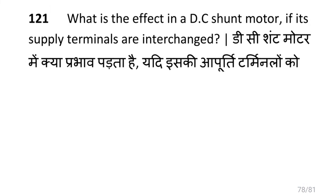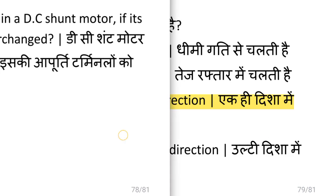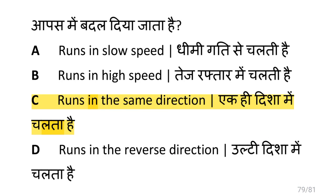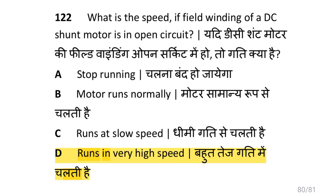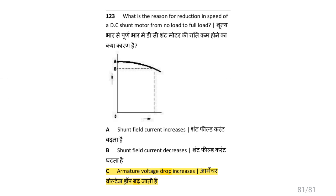What is the effect in a DC shunt motor if its supply terminals are interchanged? That is it runs in the same direction. What is the speed if the field winding of a DC shunt motor is in open circuit? Then it runs at very high speed. What is the reason for reduction in speed of DC shunt motor from no load to full load? That is armature voltage drop increases.